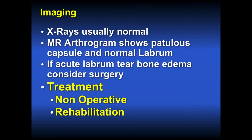Imaging: x-rays are usually normal. MR arthrogram may show a patulous capsule, but usually the labrum is normal. In these individuals, consider an intraarticular injection to better determine the status of the capsule. If there is an acute labrum tear or bone edema, consider surgery, but this is a very low percentage of these individuals. The treatment for multidirectional instability is non-operative rehabilitation. It must be done in a way that doesn't cause symptomatic subluxation — using bands, weighted balls, free weights in a scapular plane arc rather than bench press or machines.